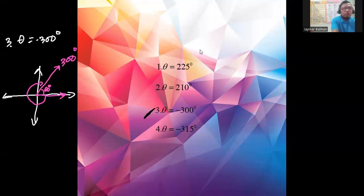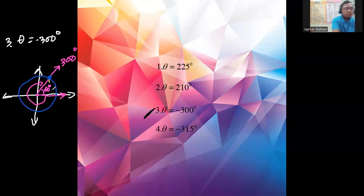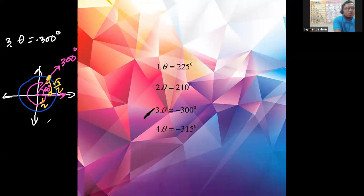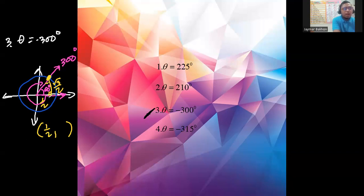We draw a unit circle and place the 30-60-90 triangle in quadrant one. This must be 90 degrees here and 30 degrees here. The side opposite the 30-degree angle is 1/2 (positive, going right) and the side opposite the 60-degree angle is √3/2 (positive, going up). The hypotenuse is 1 since it is a unit circle. So the terminal point is (1/2, √3/2) — both positive because the point is in quadrant one.